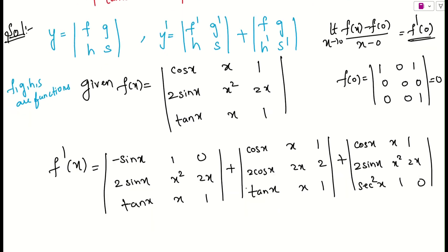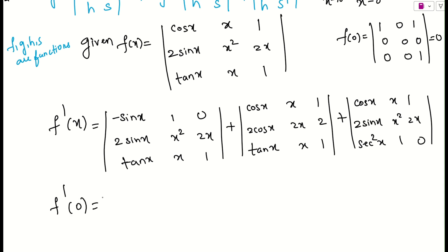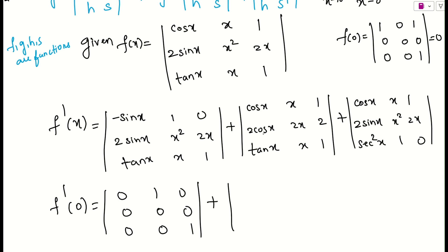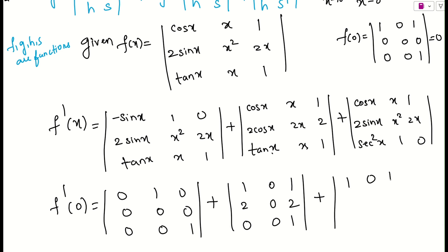Now let us find f'(0) by substituting x = 0 everywhere. First determinant: row 1 becomes −sin 0 = 0, 1, 0; row 2 is 0, 0, 0; row 3 is 0, 0, 1. Second determinant: row 1 is 1, 0, 1; row 2 is cos 0 = 1, 0, 2; row 3 is 0, 0, 1. Third determinant: row 1 is 1, 0, 1; row 2 is 0, 0, 0; row 3 is sec²0 = 1, 1, 0.